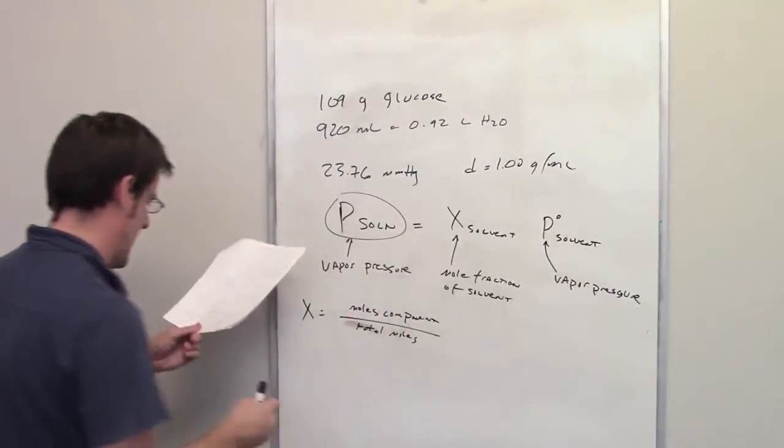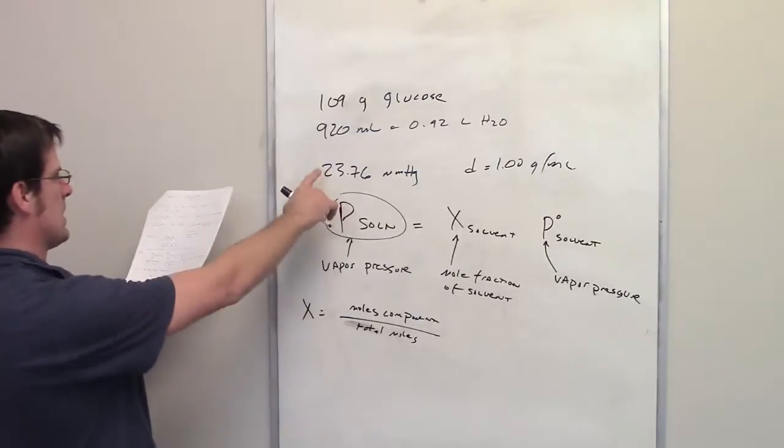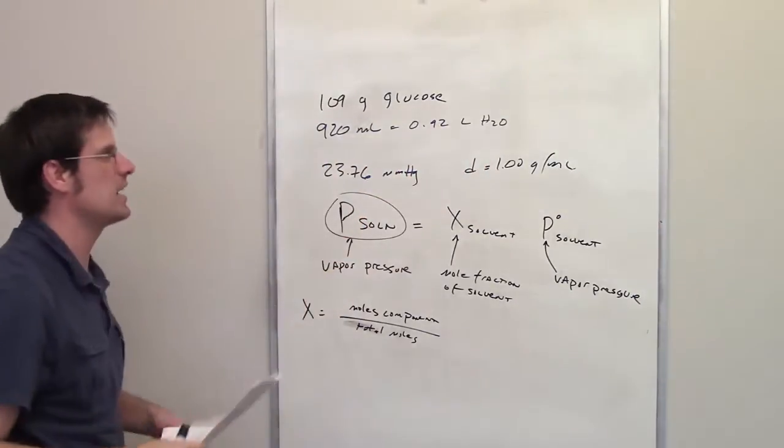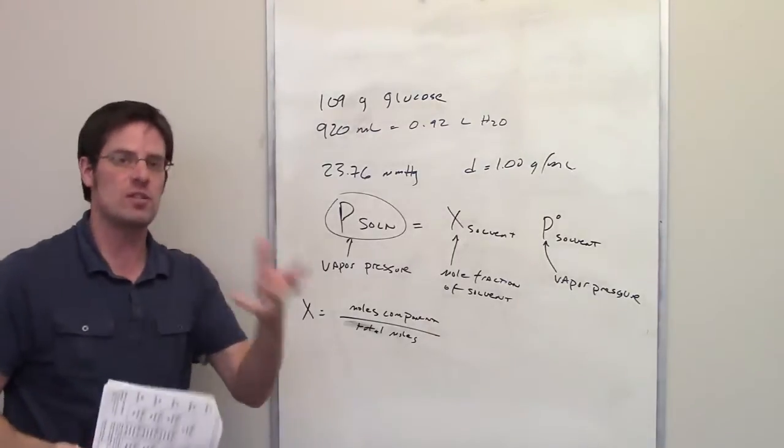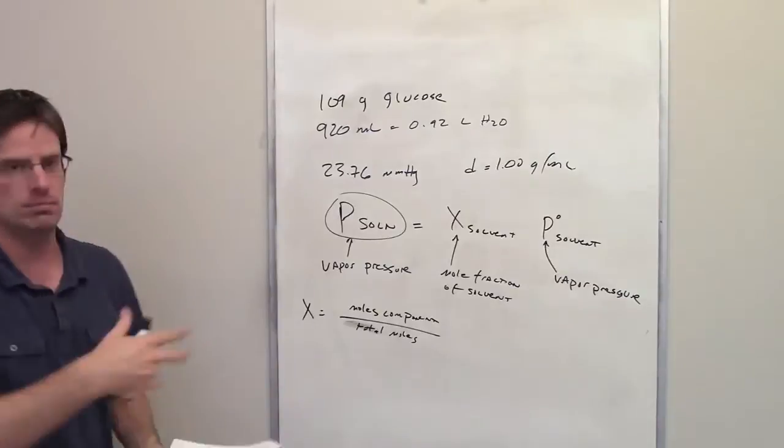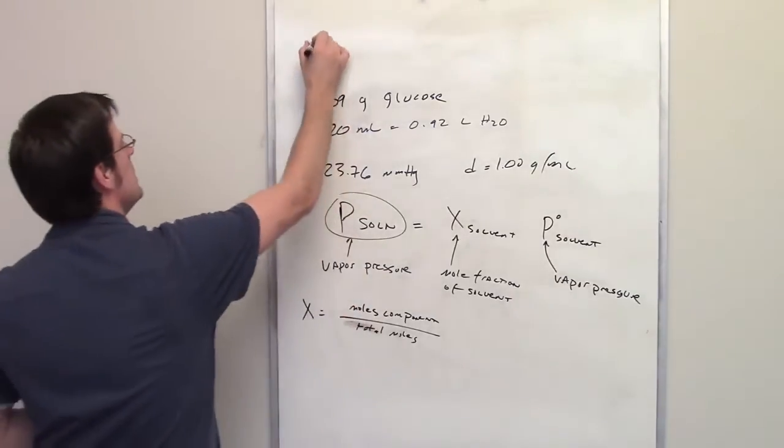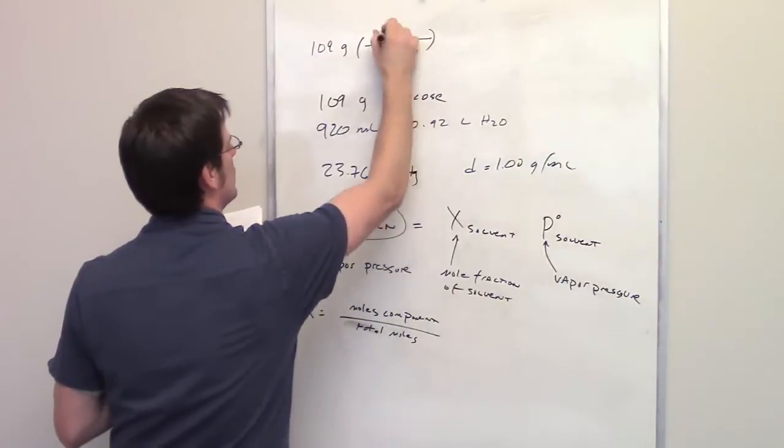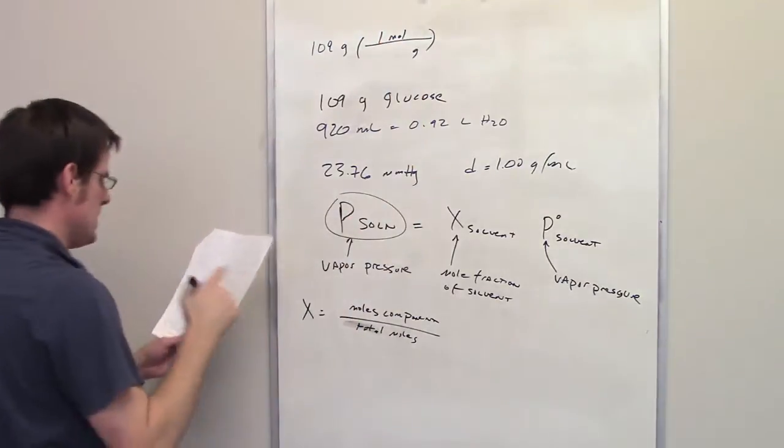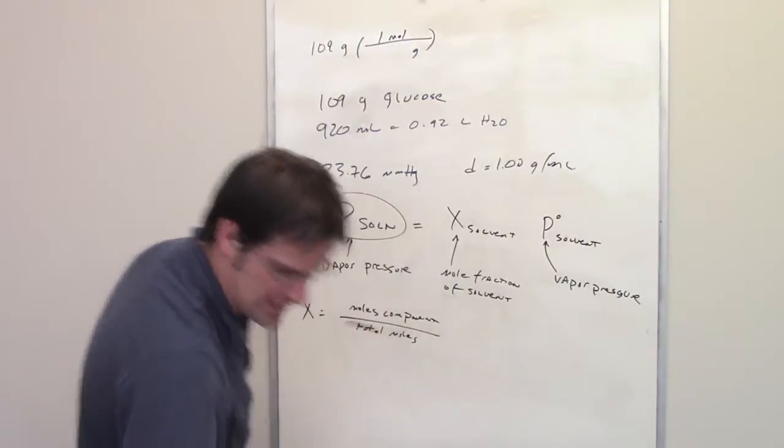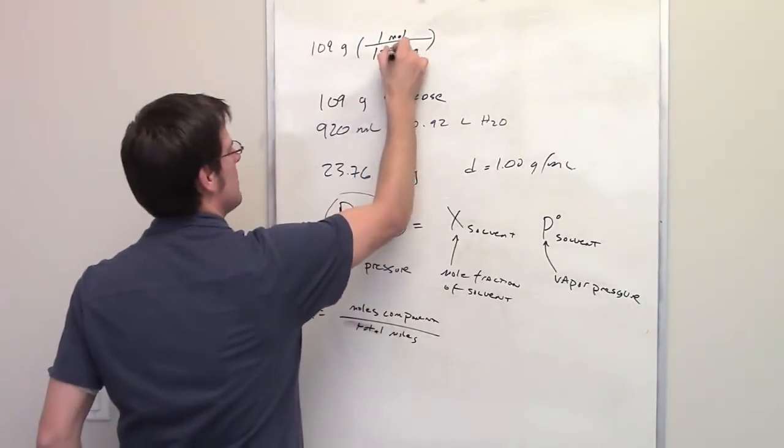We need to determine the mole fraction by using 0.92 liters of water and 109 grams of glucose. We first need to determine the total number of moles. The molecular weight of glucose is 180.2.